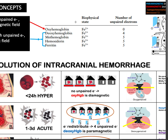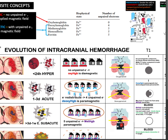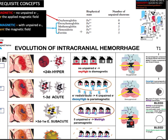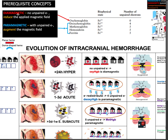Now for this table, for the different states of hemoglobin, only oxyhemoglobin is diamagnetic or without unpaired electrons. The rest of these are paramagnetic because of their unpaired electrons.